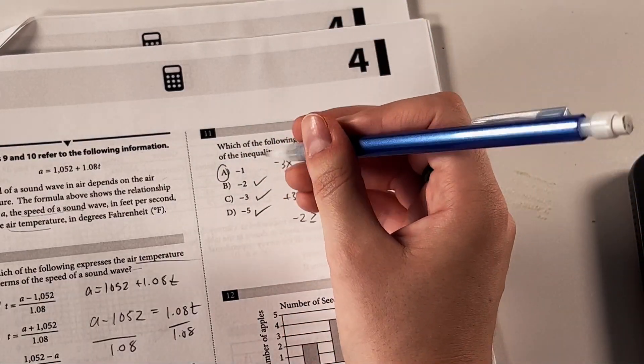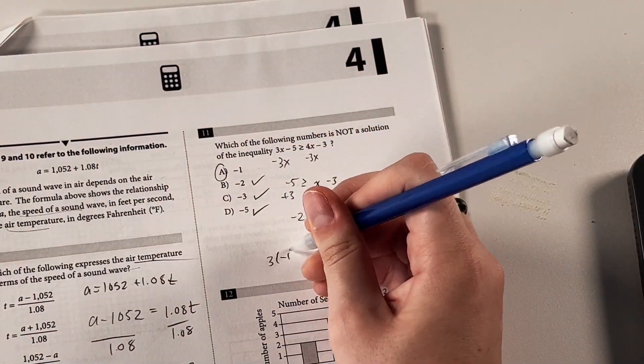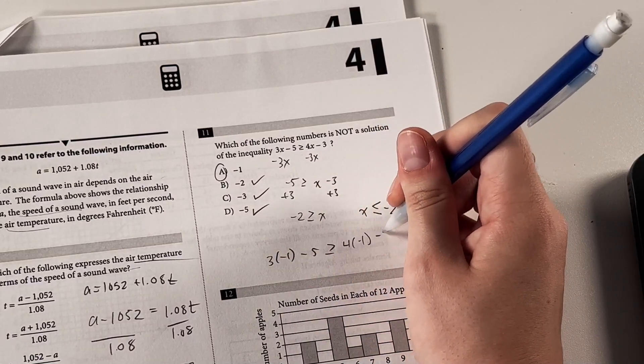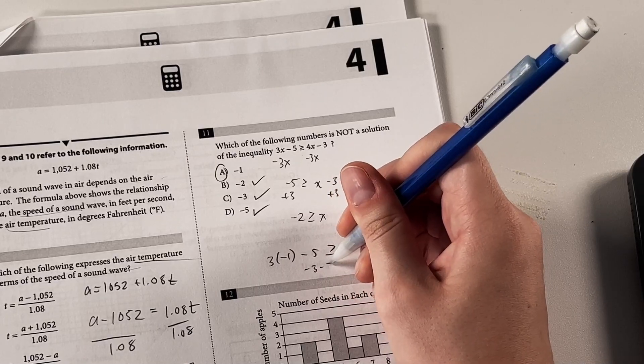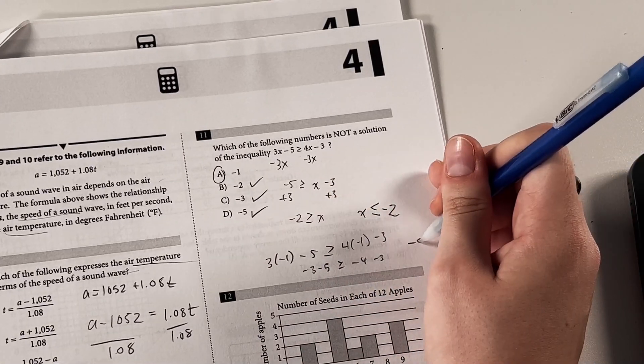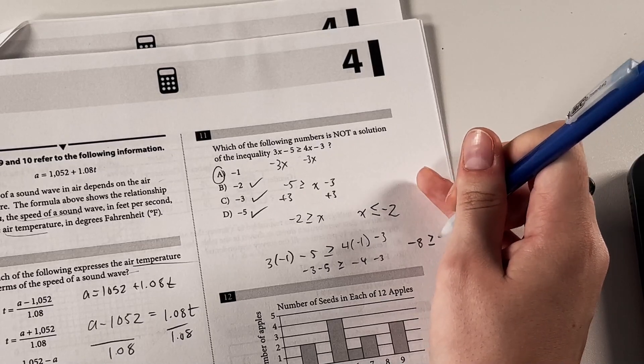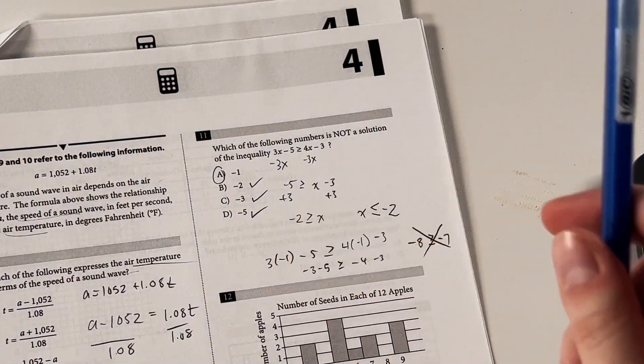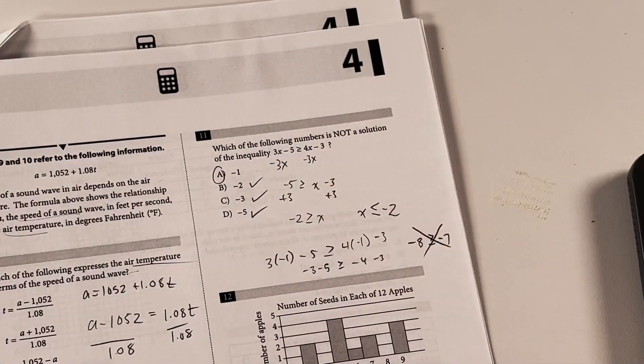And then to check this, let's just do the thing where we plug it in. So we have 3 times negative 1 minus 5 is greater than or equal to 4 times negative 1 minus 3. So negative 3 minus 5 is greater than or equal to negative 4 minus 3. Negative 8 is not greater than or equal to negative 7, so we know that is not a solution. So we picked the correct or incorrect one in this case.